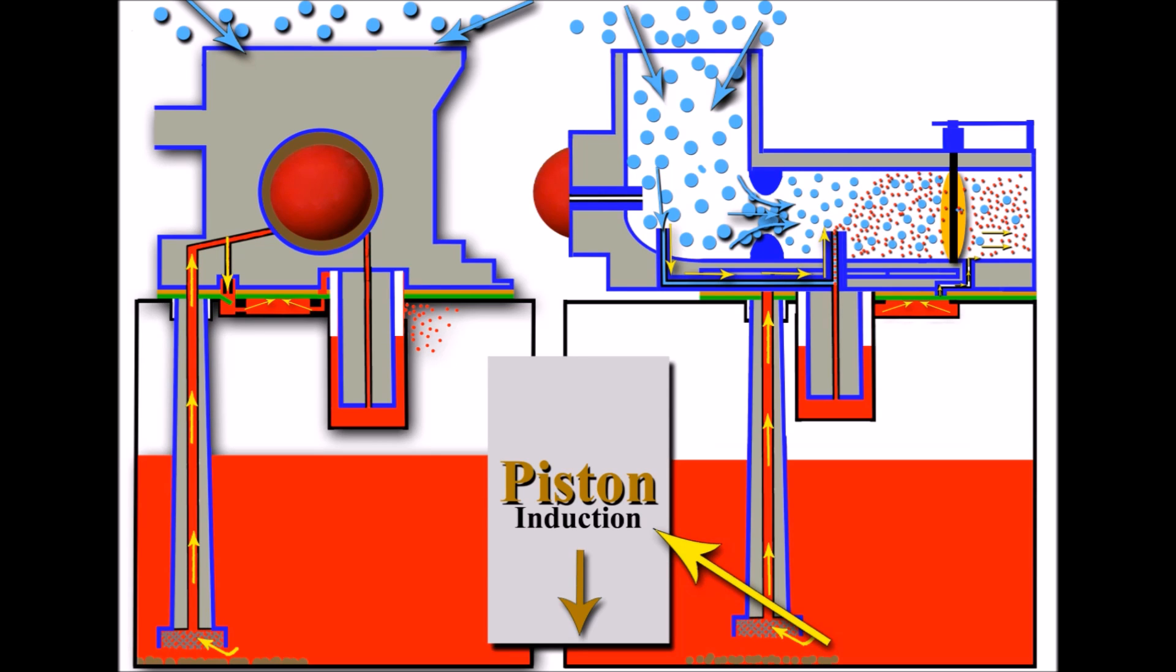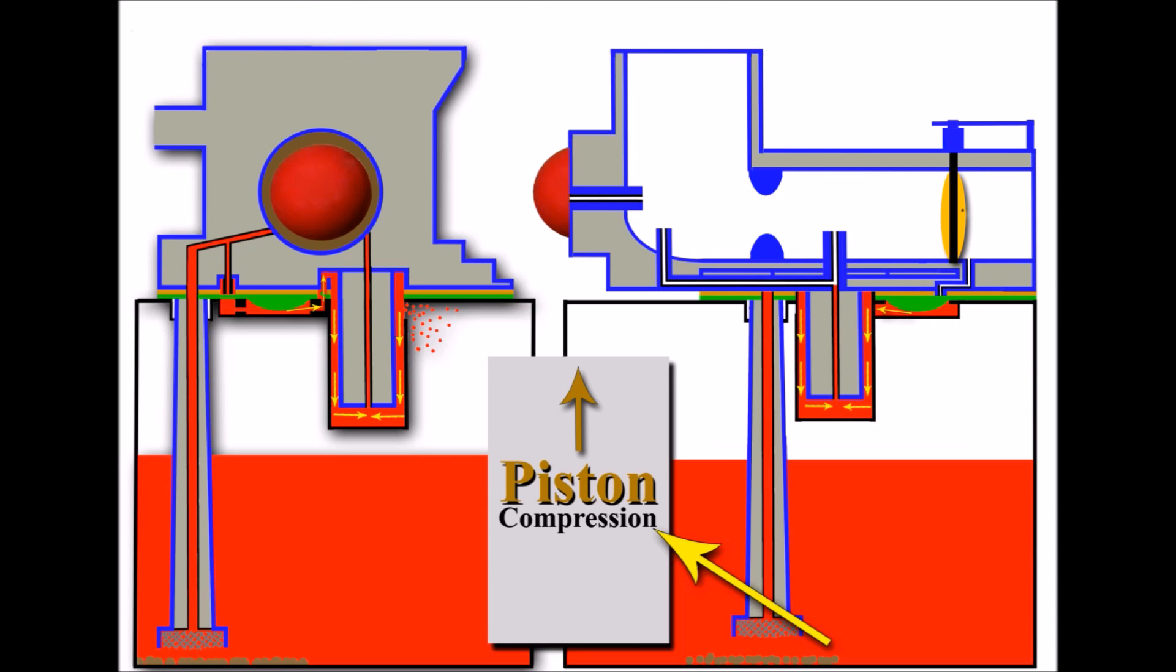So let's imagine now we're at the end of the induction stroke and we're going back up now—this is now the compression stroke. Let's have a look at the differences here. Well, the obvious difference is that the piston's now going up and there's no drawing in of air and fuel, so we haven't got that here. And because there's no air coming in, there's no vacuum drawing any fuel up from here.